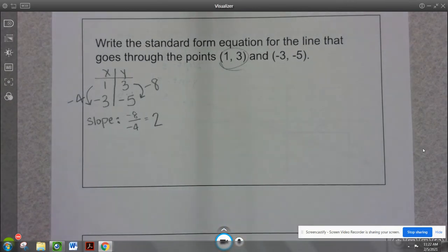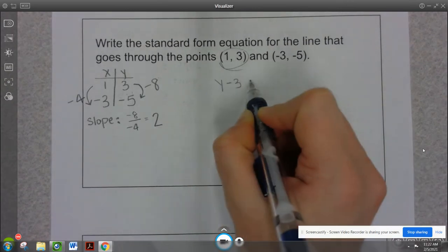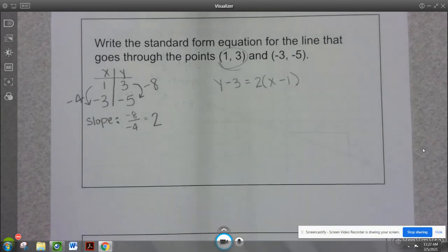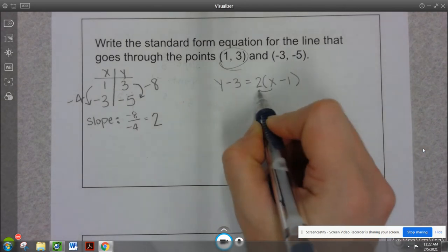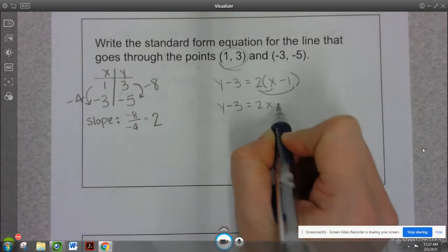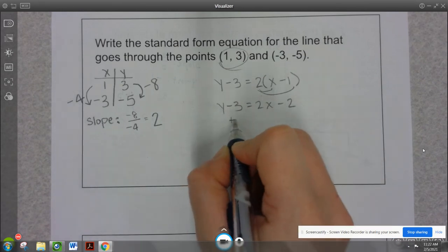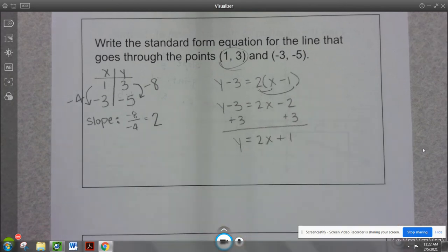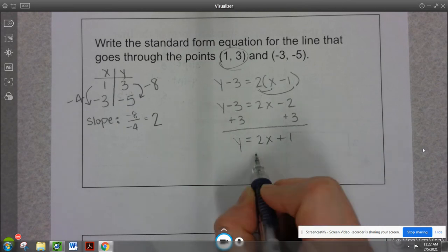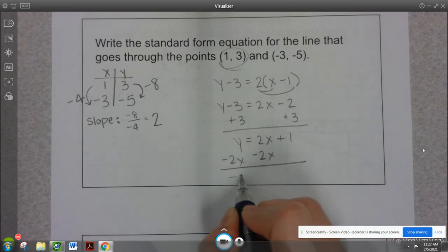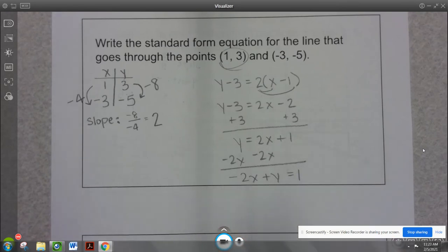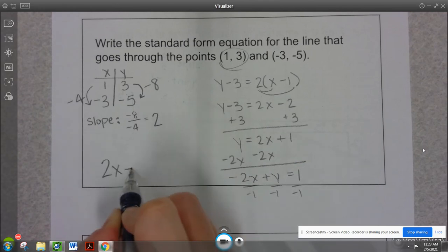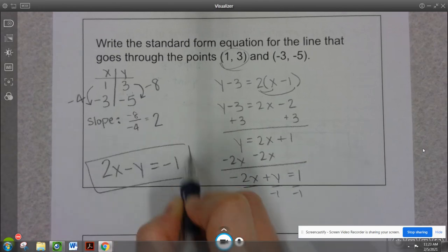I'm going to use this first point in my point-slope form. And now we're going to do the exact same thing we did before. I'm going to distribute. I'm going to get constants together on the same side of the equal sign. I'm going to move x to the other side. But x is negative. That's no good. So everybody's sign has to flip, which is going to give me 2x minus y equals negative 1.